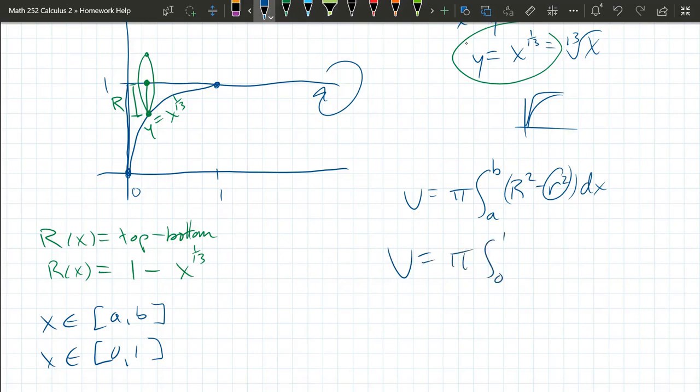So our volume is pi integral 0 to 1. Big R squared, which is on the left. We just wrote down 1 minus x to the 1/13th power squared. You could write minus 0 squared dx, because little r is 0.